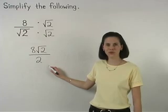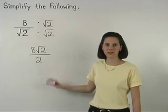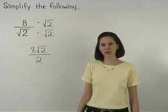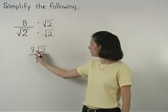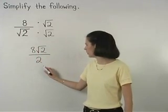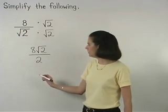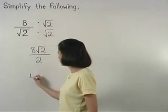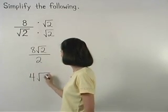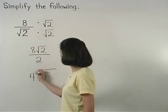So we have 8 root 2 over 2. As our final step, we can divide the 8 that is outside the radical in the numerator by the 2 in the denominator. 8 divided by 2 is 4, so our final answer is 4 root 2.